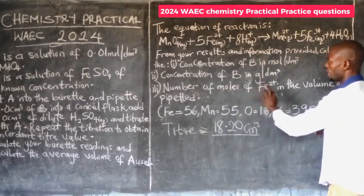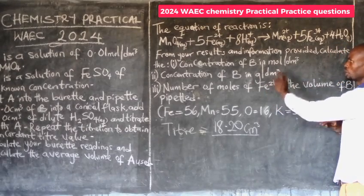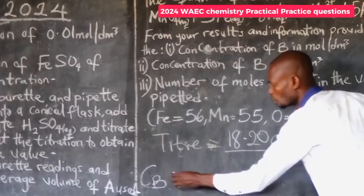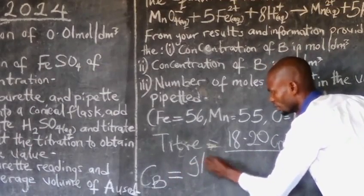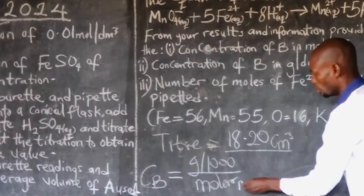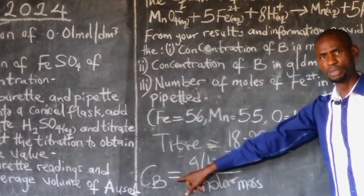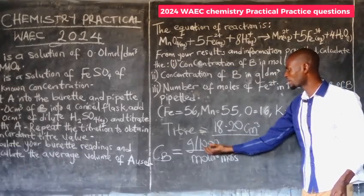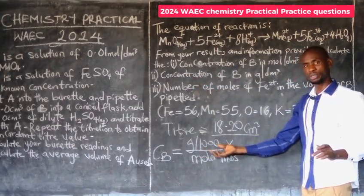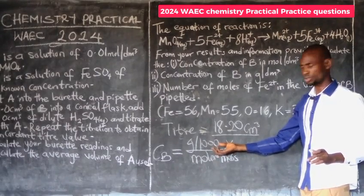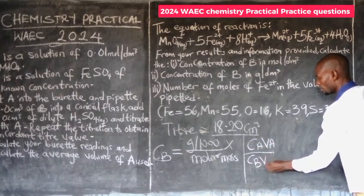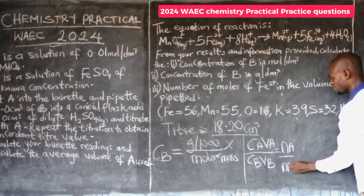So let's completely solve this question now. We are given all the necessary information. The first thing is to calculate the concentration of B in mol per dm³. We cannot use the formula CB = (g per dm³) ÷ molar mass directly, because we are not given the mass concentration. Since that formula cannot be used straight away, we are going to use the conventional formula: CAVA ÷ CBVB = NA ÷ NB.